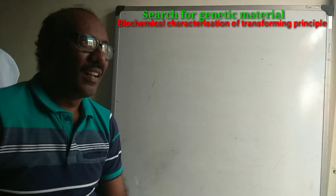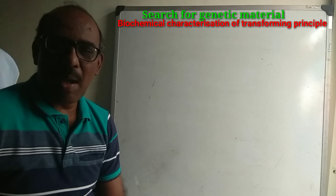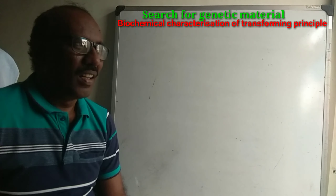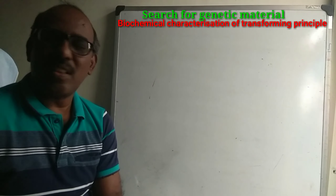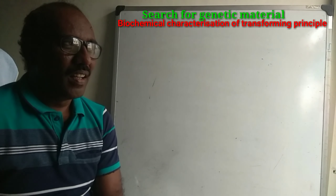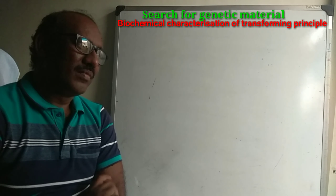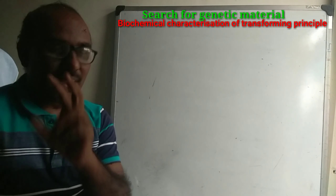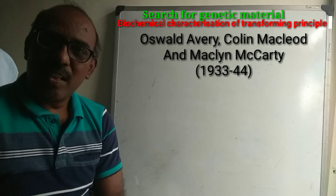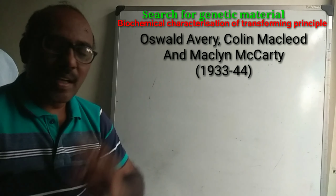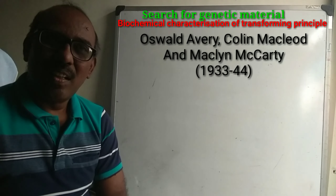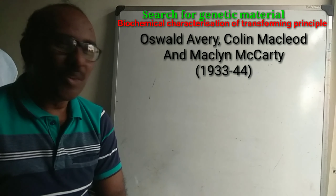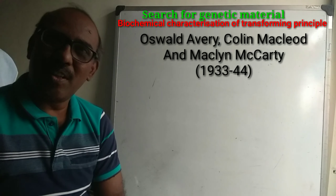In the Griffith experiment, in 1928, mice were used with Streptococcus pneumoniae in a transformation experiment. This same material — Streptococcus pneumoniae with R strain and S strain — was used by Avery, MacLeod and McCarty. The question remained: what material is responsible for transformation?